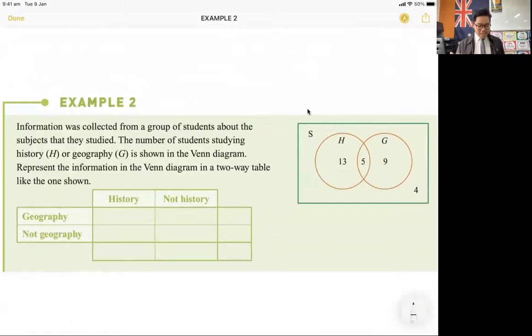It says here that information was collected from a group of students about the subjects that they studied. The number of students studying history, H, or geography, G, is shown in the Venn diagram on the right. Represent the information in the Venn diagram in a two-way table like the one shown.